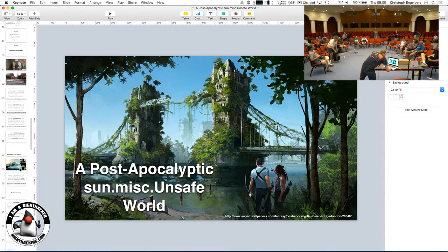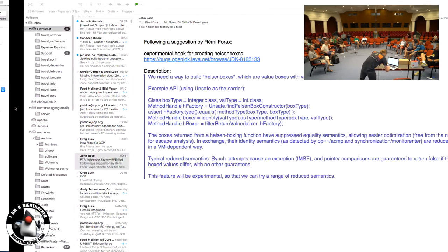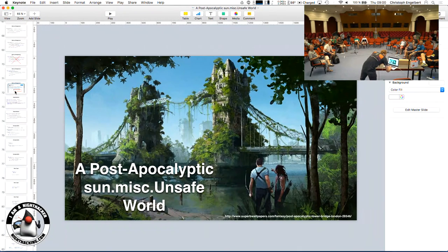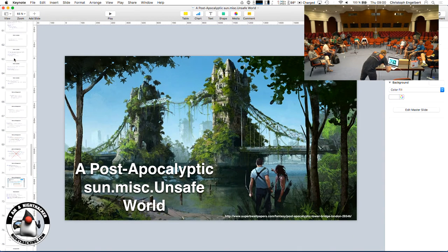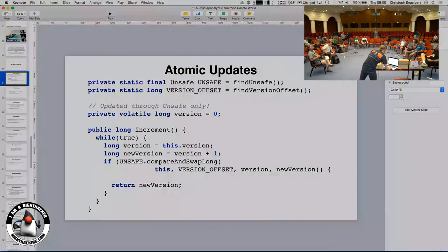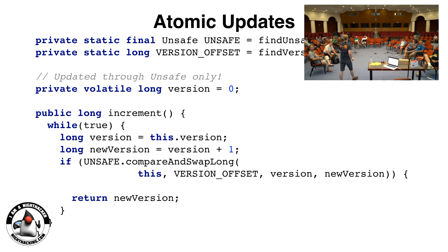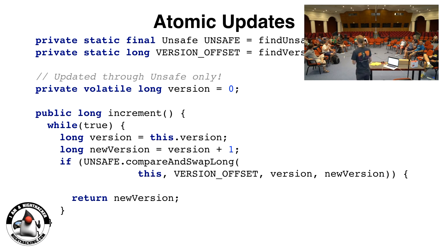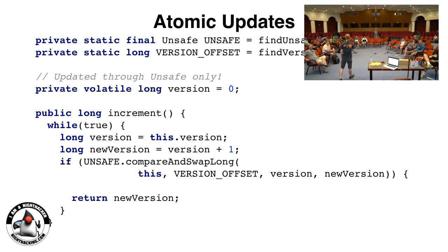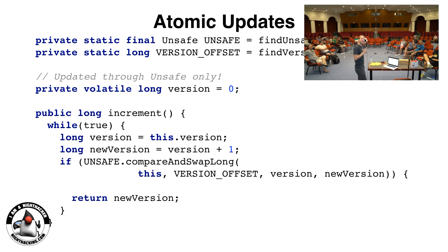Let's get to the interesting stuff. I want to make this a discussion, and that's the reason why I asked you to be here, and why I'm glad Ivan is here, along with a couple of other guys like Cliff. First of all: atomic updates. I think a lot of people know about atomic updates in various ways. This is probably the one you're not supposed to use — like in most talks, the first slide is the one with unsafe.